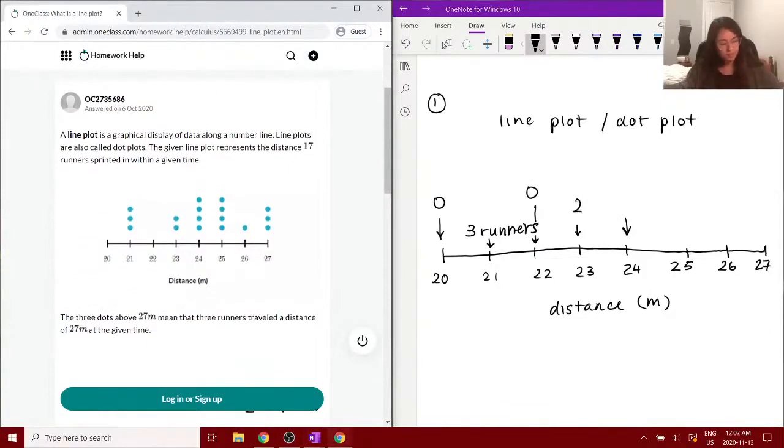Above 24, there's four runners. Above 25, there's also four runners. Above 26, we have one runner, and above 27, we have three runners. If you add all those up, you get 17 runners.